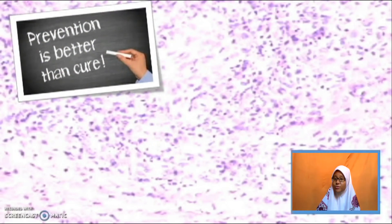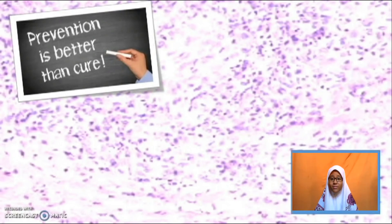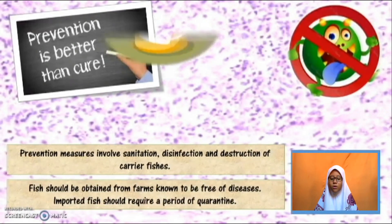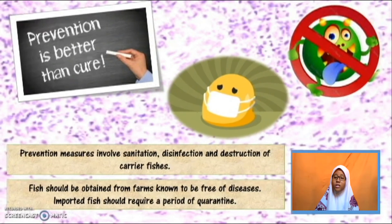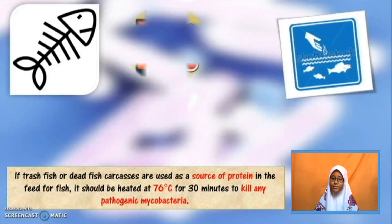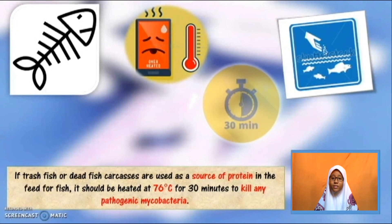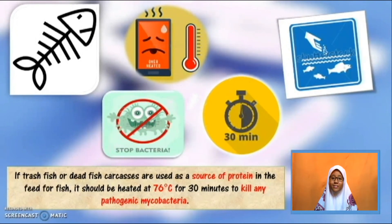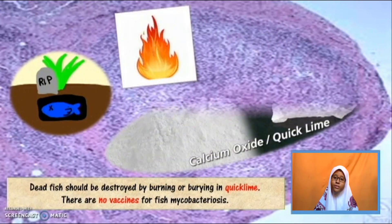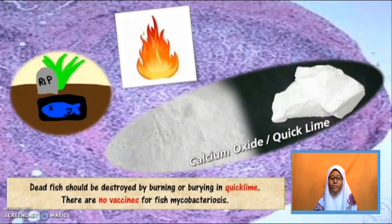As the saying goes, prevention is better than cure. Prevention measures involve sanitation, disinfection and destruction of carrier fishes. Fish should be obtained from farms known to be free of diseases. Imported fish should require a period of quarantine. If trash fish or dead fish carcasses are used as a source of protein in feed, it should be heated at 76 degrees Celsius for 30 minutes to kill any pathogenic mycobacteria. Dead fish should be destroyed by burning or burying in quicklime. There are no vaccines for fish mycobacteriosis.